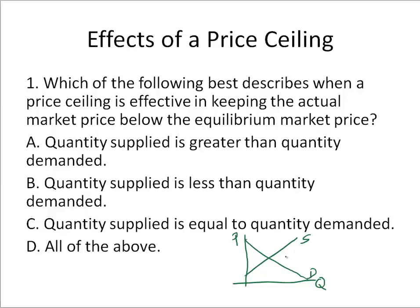If the price ceiling is above equilibrium, it's a barrier that won't let you go up, so you just go to equilibrium. The only way a price ceiling has an effect is when it's below equilibrium. At that price, people want more at lower prices — a lot of demand — but firms don't want to produce as much, so we've created a shortage. Quantity supplied is less than quantity demanded.